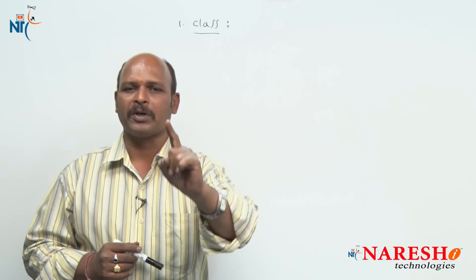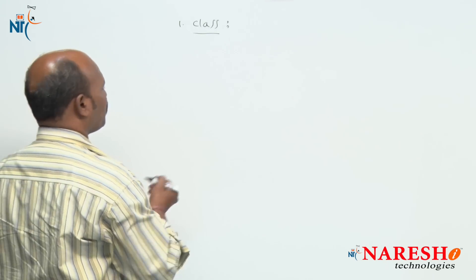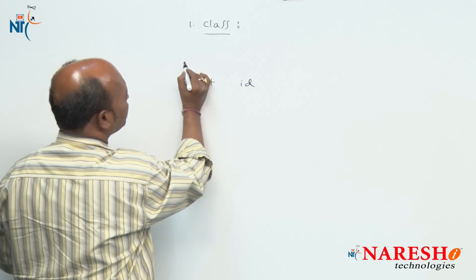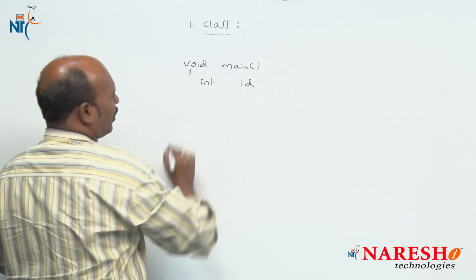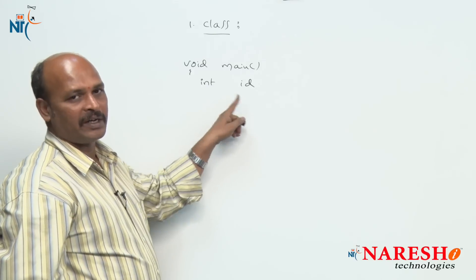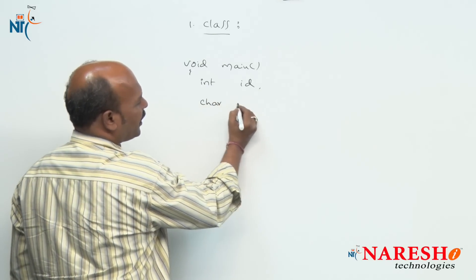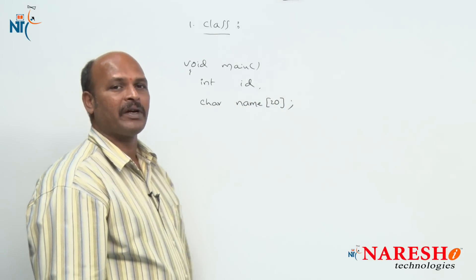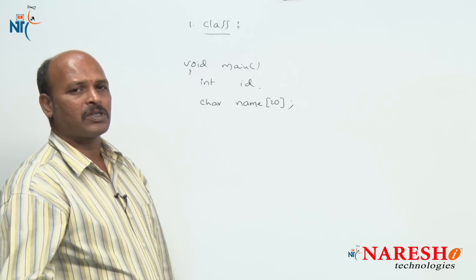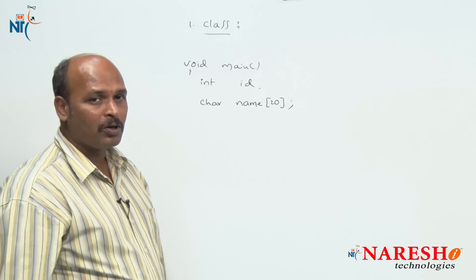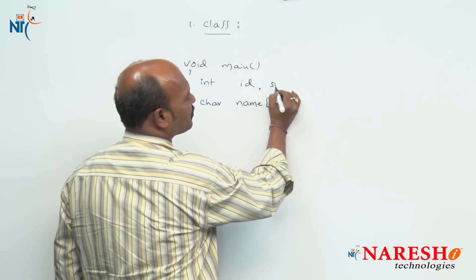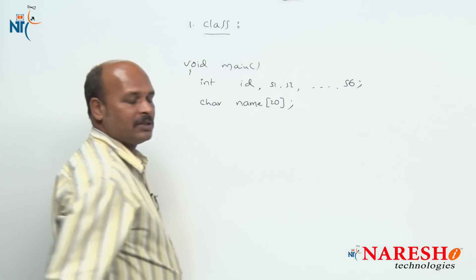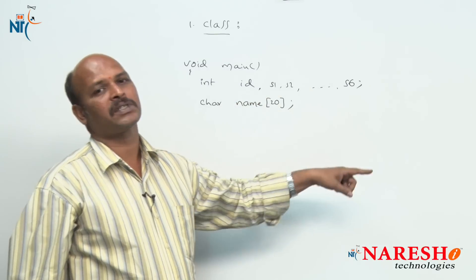For example, I want to store one particular student's data. Every student has an id number, name, and subject-wise marks. I have to declare int id, student name, and every student has subject-wise marks — for example, one student has 6 subjects, so I declare s1, s2 through s6 — that is 6 variables for 6 subjects. Instead of this, can I declare an array? Yes, I can use an array in place of normal variables.